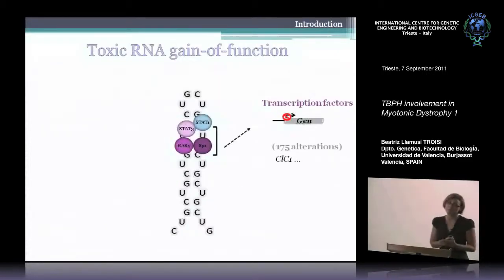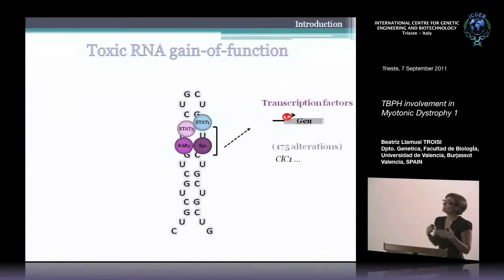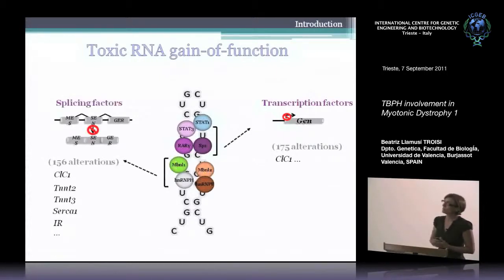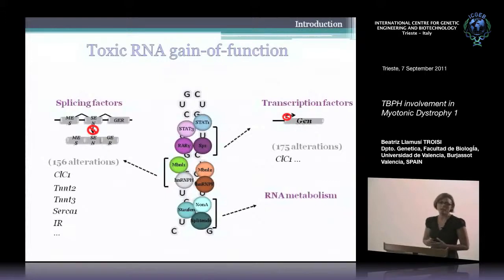Several proteins have been found attached to the hairpin, mostly transcription factors, which result in alteration in the transcription levels of about 275 different transcripts in mouse models. Also, splicing factors are attached to the repeats, resulting in alteration in more than 150 different transcripts. Finally, some proteins related to RNA metabolism.